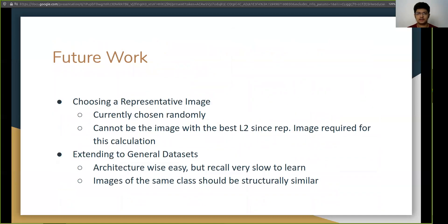For the future work, we have identified two major types of issues. One is choosing the representative image. So I talked about how we have a predefined set of representative images for each label. But I never talked about how they are chosen. So currently, they are chosen randomly, as simple as that. But there must be some better way to choose a representative image. Of course, we cannot take the one with the least L2 distance or something like that because it's a loop. So a representative image is required for calculating the L2 distance. So there must be some predefined way of choosing a representative image.